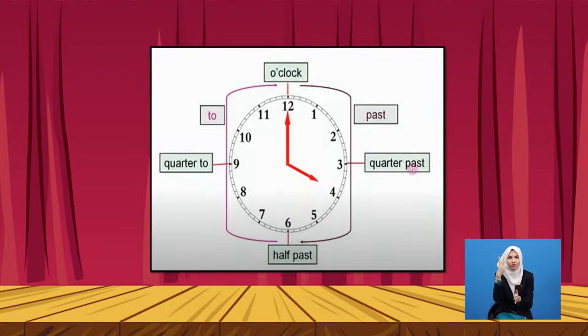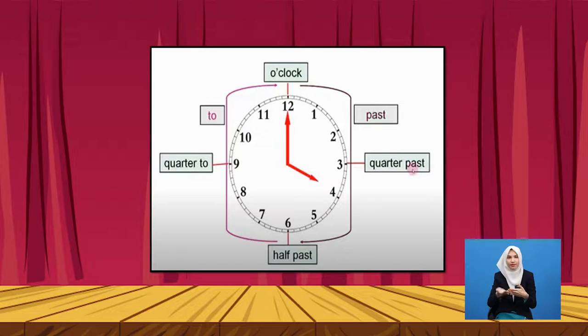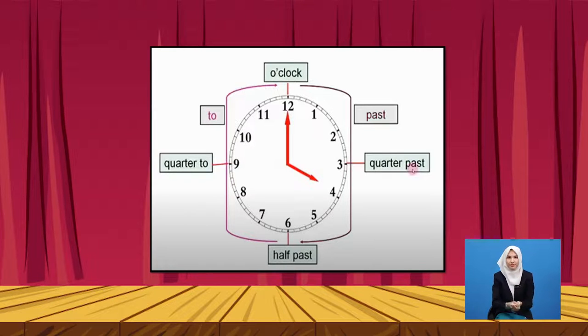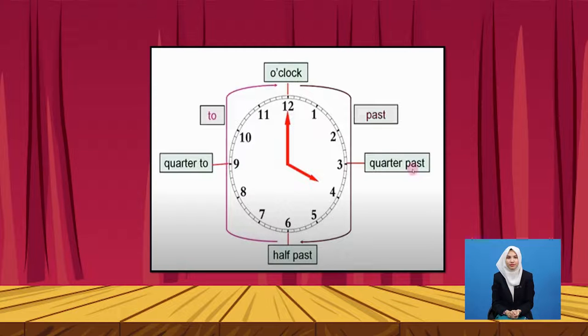So boys and girls, to summarise the telling of time in English using the first method: at the top, if the minutes are at 12, we say 'o'clock'. If the minutes are between 12 and 6, then we say 'past'. And if the minutes are on the left side of the clock after half past and up until the hour, then we use the word 'to'. There are three special cases: when the minutes are 15, we say 'quarter past'; when they are 30, we say 'half past'; and when they are 45, we say 'quarter to'. This is quite a useful diagram for you.